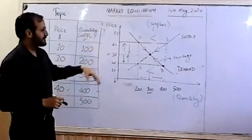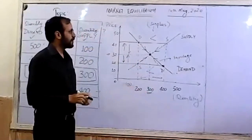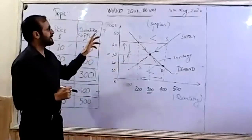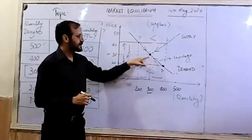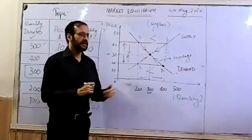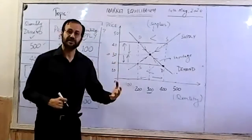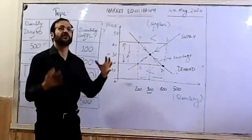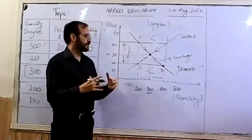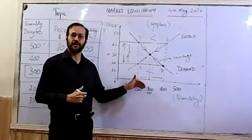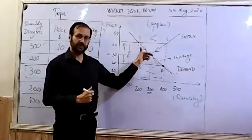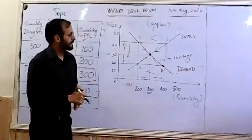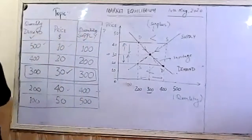So two key things from this segment: market equilibrium is where both demand and supply are equal, and market disequilibrium is where demand and supply are not equal because prices are set above or below equilibrium.